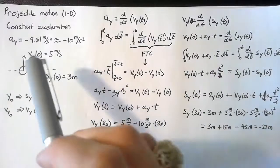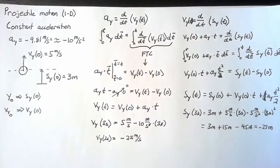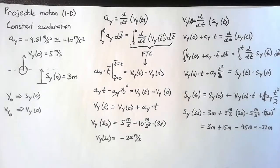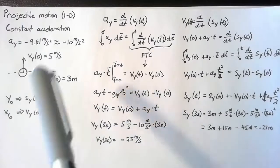So for the very simple case where we have a constant acceleration, we have just derived the velocity and the position over time given some initial conditions.